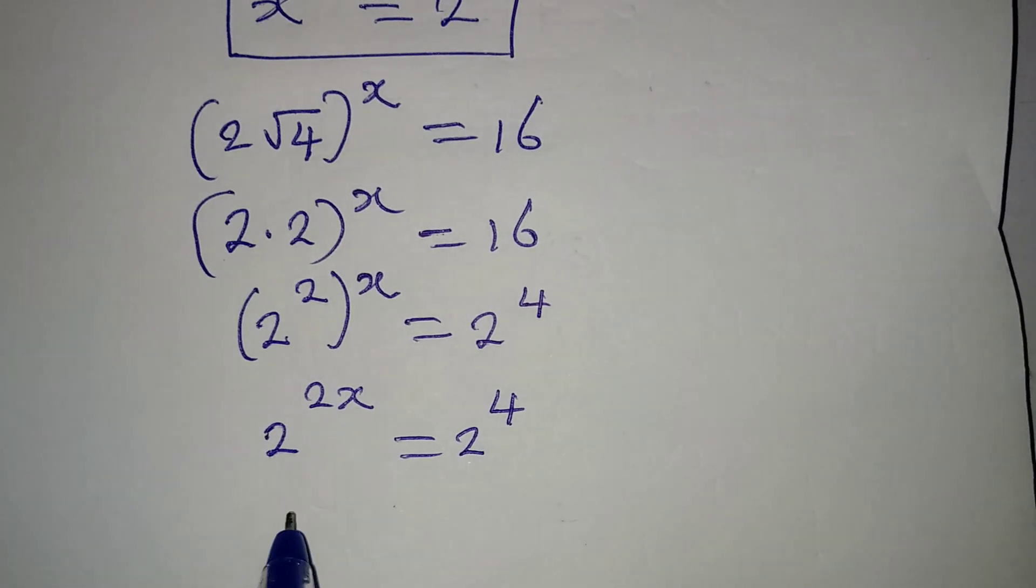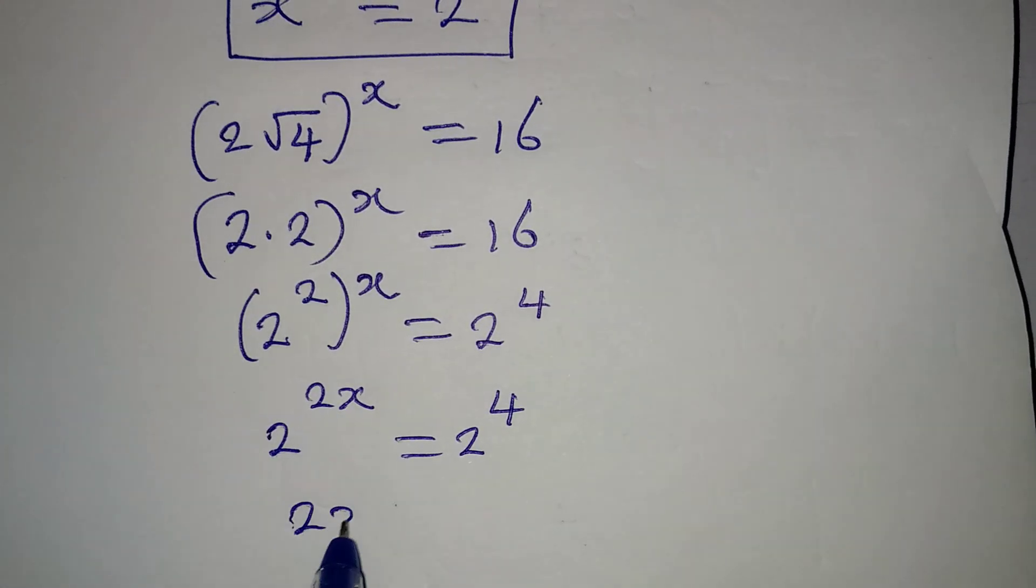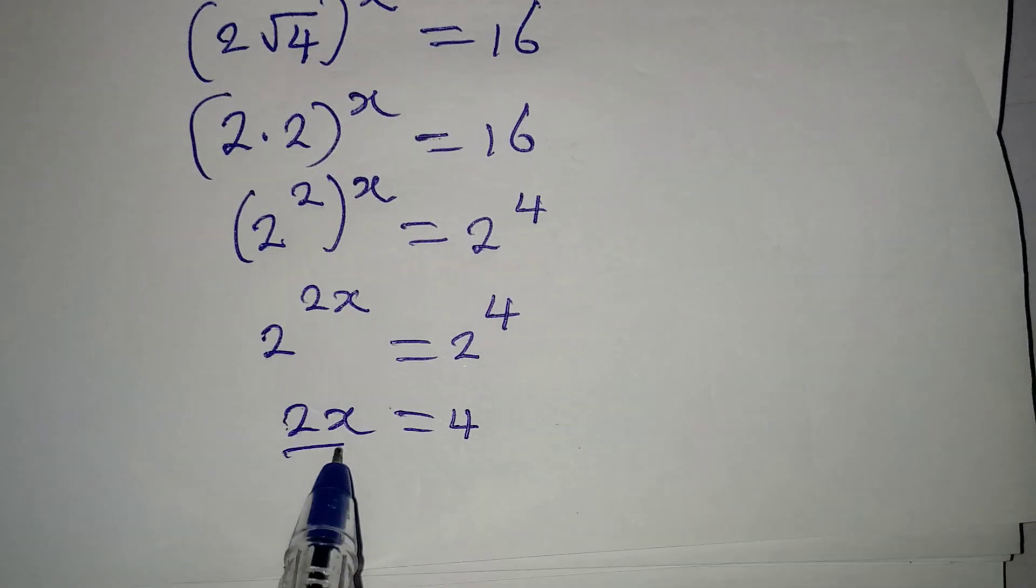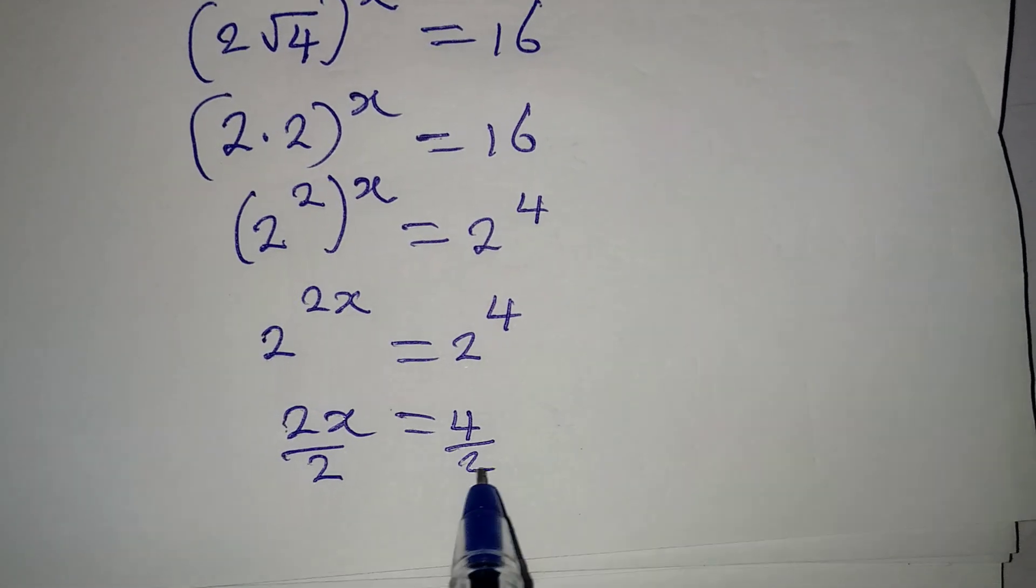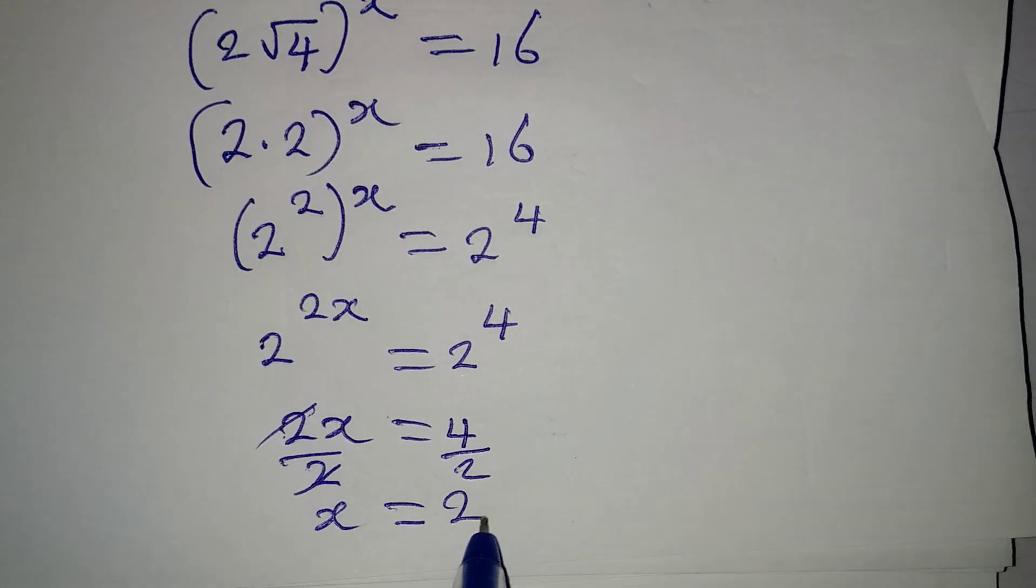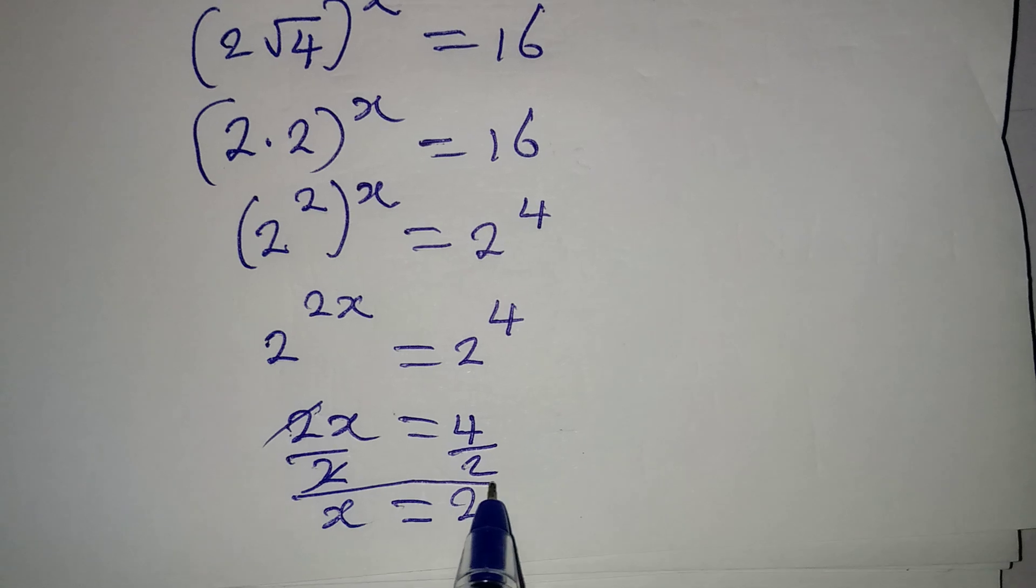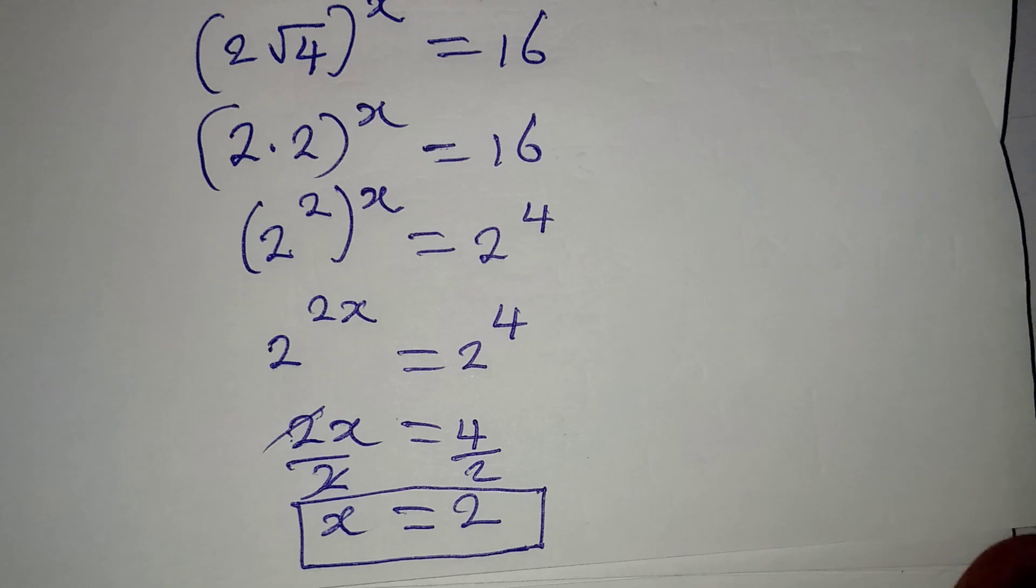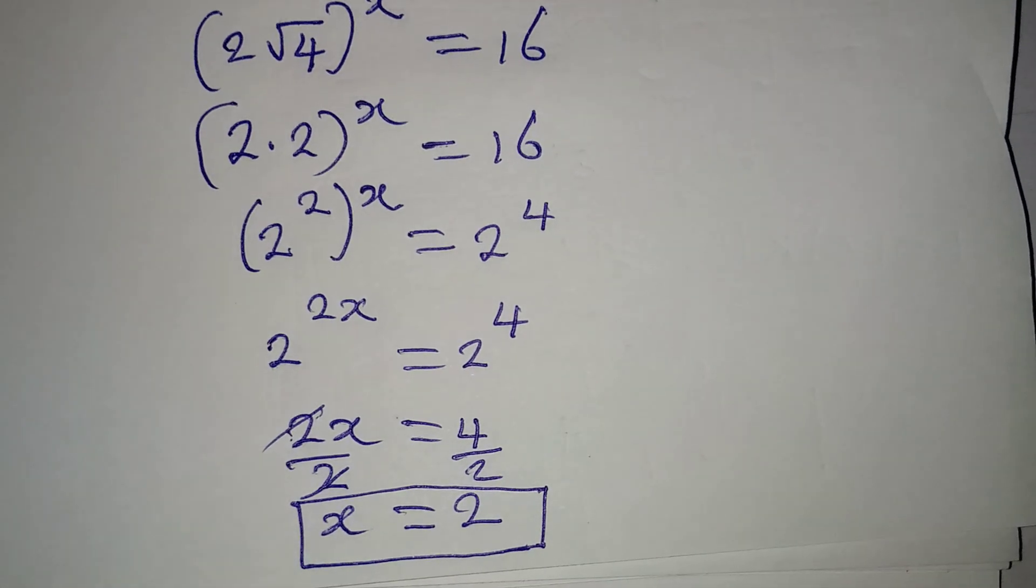The bases are the same, so equal the powers. 2x equals 4. We divide by the coefficient, which is 2, and x equals 2. Using the second method, we still got the same value for x.